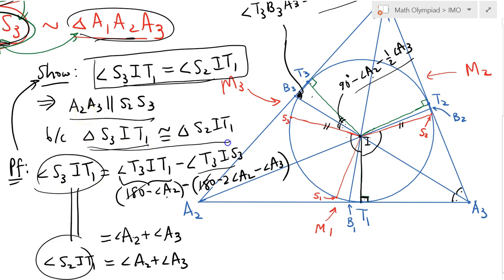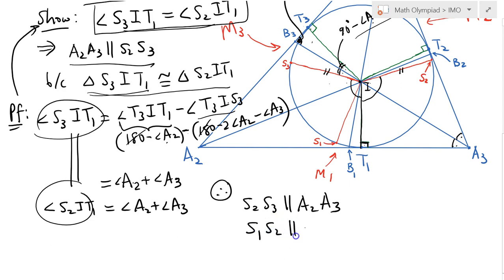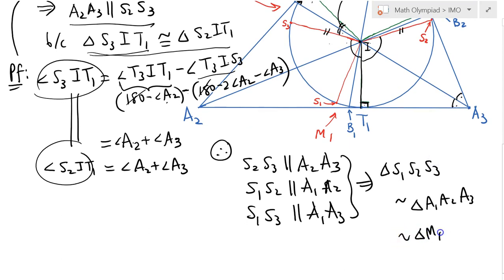This congruence establishes that S2 S3 is parallel to A2 A3. In a similar way, S1 S2 is parallel to A1 A2, and S1 S3 is parallel to A1 A3, implying the desired result: triangle S1 S2 S3 is indeed similar to triangle A1 A2 A3.